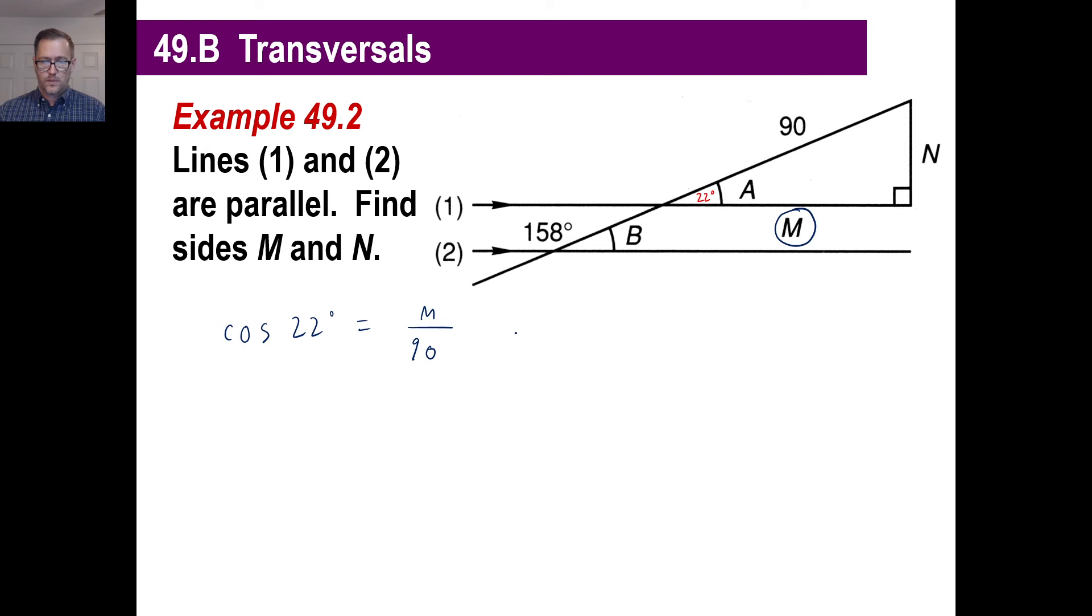Cosine of 22, pop it in there. What did you get? I got 0.927. So, in other words, we got 0.927 equals M over 90. And you'll get faster at this to the point where you don't even have to mess with this. You'll just see this and you'll go, oh, I'm going to multiply 0.927 times 90, which you can do now.